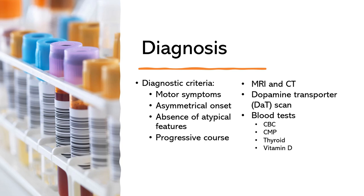The presence of two or more of these motor symptoms, along with a good response to levodopa, is often considered a strong indicator of Parkinson's disease. Parkinson's disease often begins on one side of the body and may later involve the other side as the disease progresses. This asymmetrical pattern of motor symptoms can be a diagnostic clue. The absence of atypical features, such as early and prominent balance problems, early and severe cognitive impairment, or other atypical symptoms, can help differentiate Parkinson's from other neurodegenerative disorders.